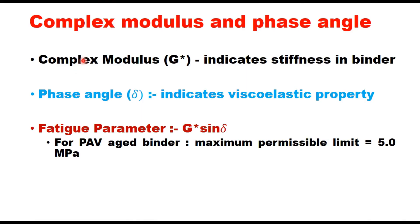There are two parameters: complex modulus G* and phase angle delta. Complex modulus G* indicates stiffness in the binder, whereas phase angle delta indicates the viscoelastic property of the binder. The fatigue parameter is G* multiplied by sine delta.